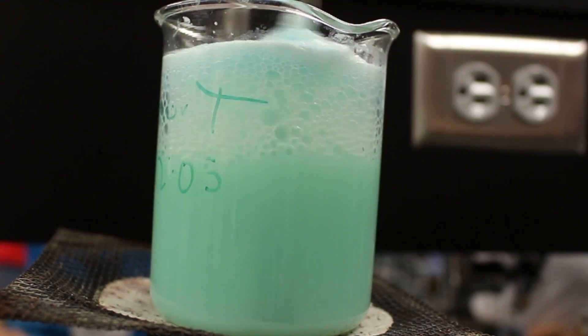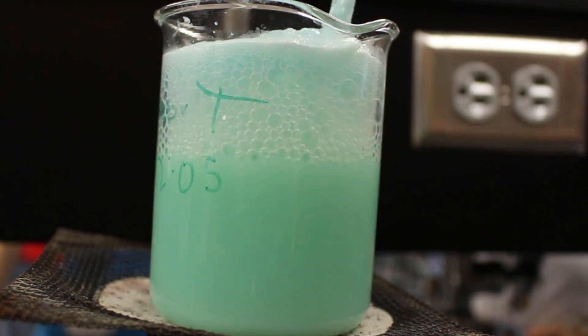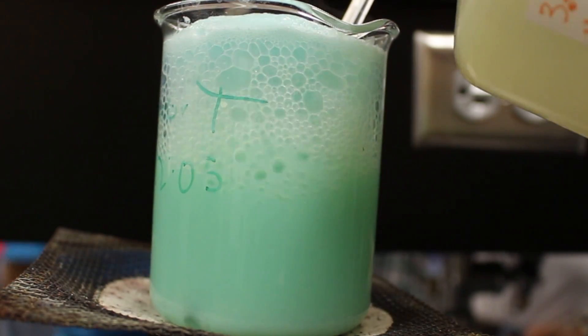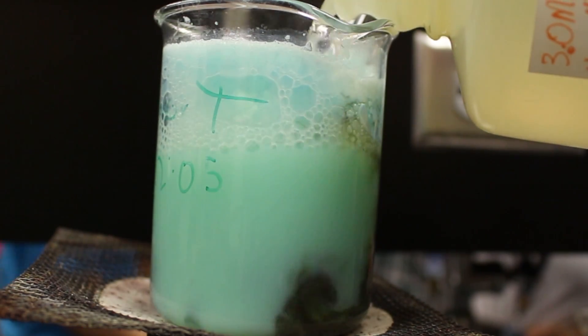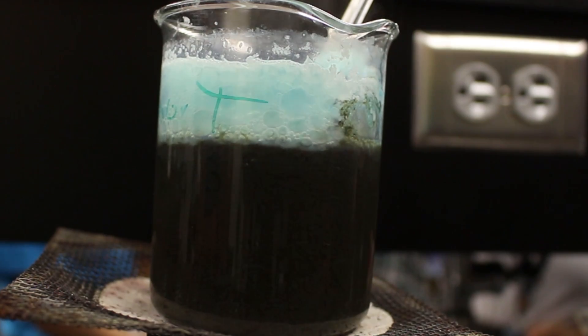After the heating of the copper 2 hydroxide almost to boiling and the addition of some extra sodium hydroxide, black copper oxide was formed.